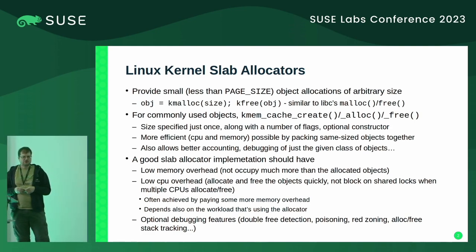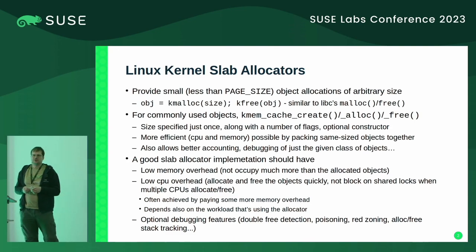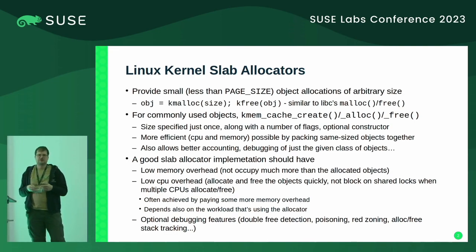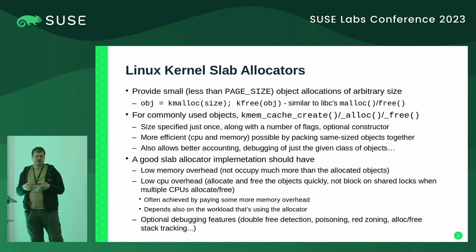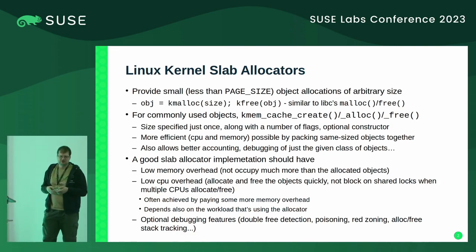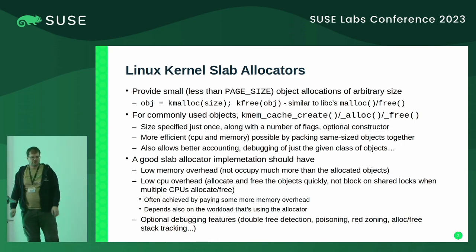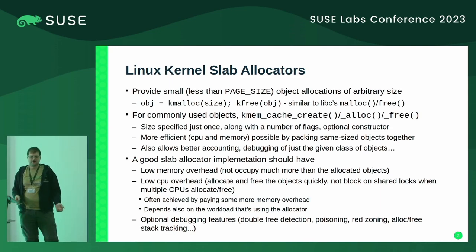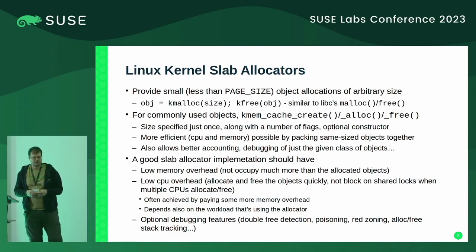Then somebody realized — and I'll be talking in detail later — that in the kernel you end up with many objects holding the same kind of structure, like socket or dentry. If you create special kinds of caches to allocate only such kinds of objects, you get better efficiency and accounting — you can know how many sockets you have allocated and find memory leaks more precisely. That's why we now have kmem_cache_create, alloc, and free calls, and kmalloc and kfree just become a special case of those.